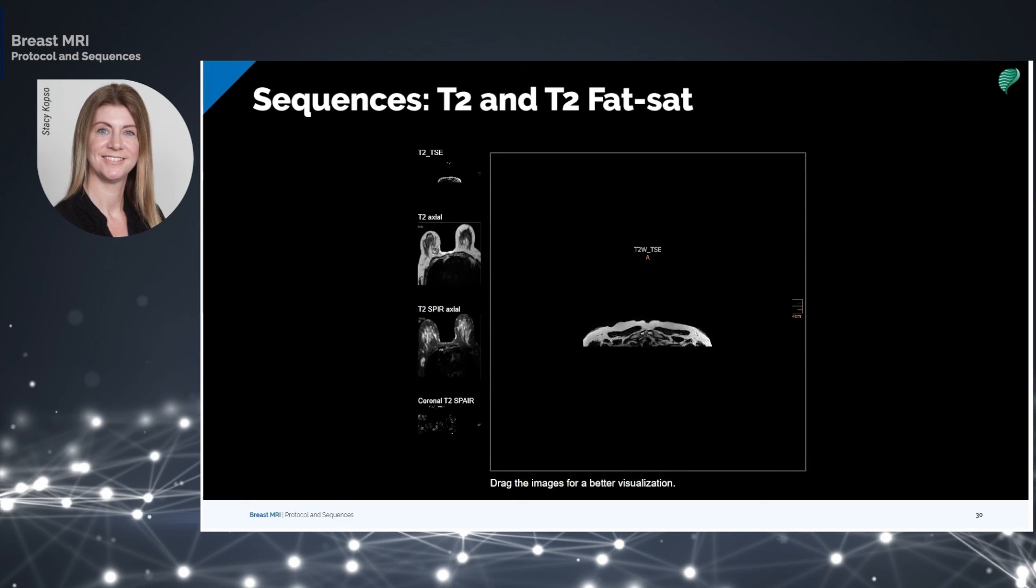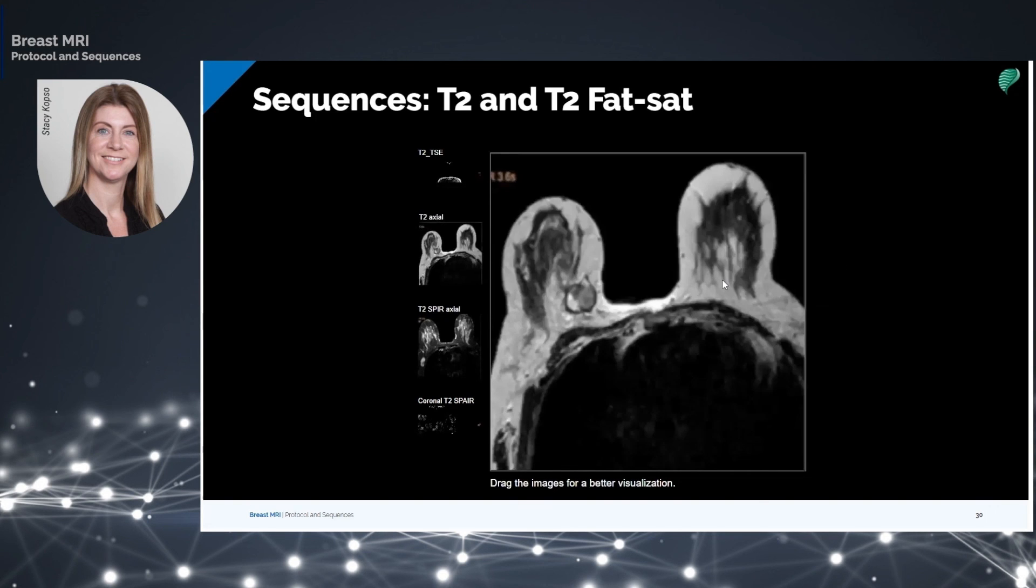Fat also appears hyperintense on T2, which is why fat suppression T2 is important to cancel out the fat signal to help identify the type of lesions.